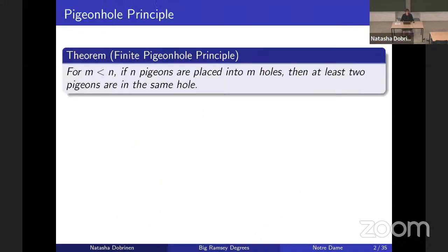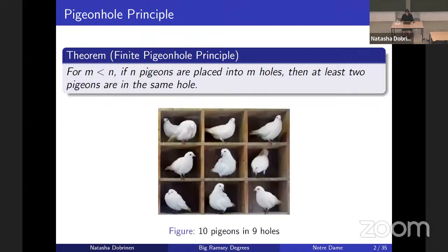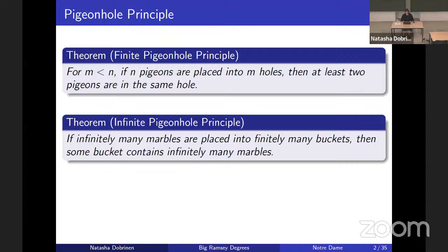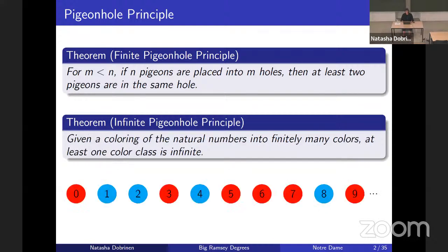I'm going to start with the pigeonhole principle, which states that if you have more pigeons than you have holes, and every pigeon is placed into a hole, then at least one of the holes will have two pigeons. Here's a picture of our pigeonhole principle for this case of 10 pigeons in nine holes. The infinite pigeonhole principle says that if you have infinitely many marbles and they're placed into finitely many buckets, then some bucket will contain infinitely many marbles. Or stated another way, if you color the natural numbers into finitely many colors, then at least one of the color classes will be infinite. For example, if you have red and blue natural numbers, then there will be either infinitely many red ones or infinitely many blue ones.